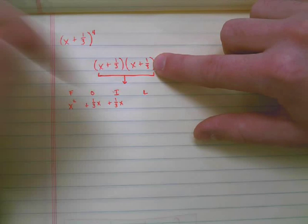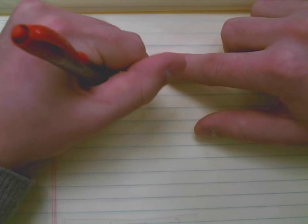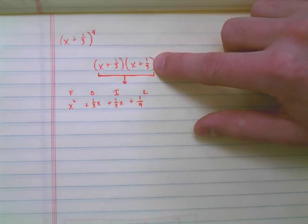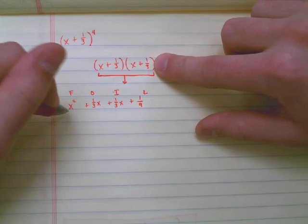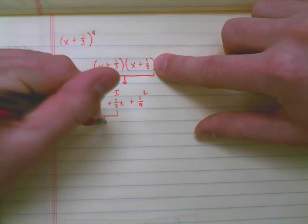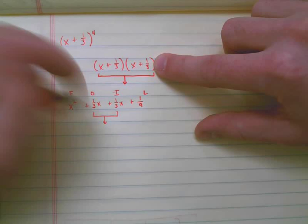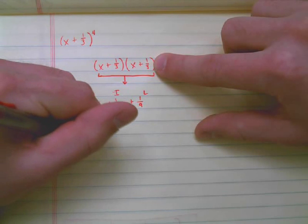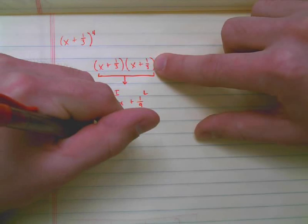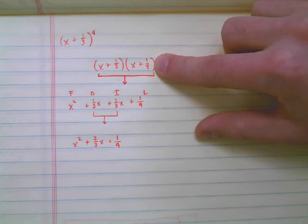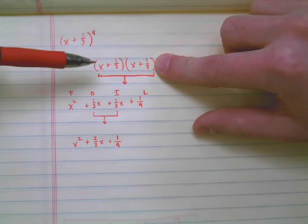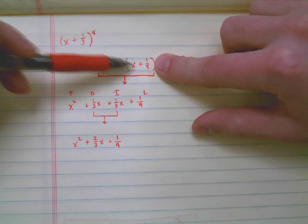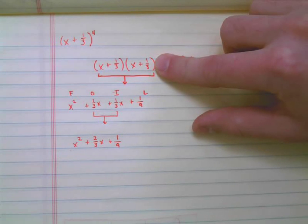If you put that in your calculator, if you're not for sure, you should get an answer of one-ninth. So really, if I can combine these, now notice that one-third x and one-third x I can combine. I can add them together. I end up with x squared plus two-thirds x plus one-ninth, right? And that would be what I would get if I just had x plus one-third and I FOILed it out and only had two terms, right?